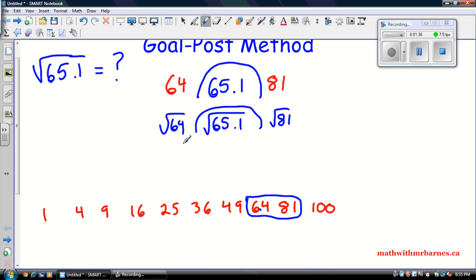So now, I know the square root of 64, well that's just 8. So that must mean the square root of 65.1 is between 8 and the square root of 81 is 9. So it's somewhere between 8 and 9.